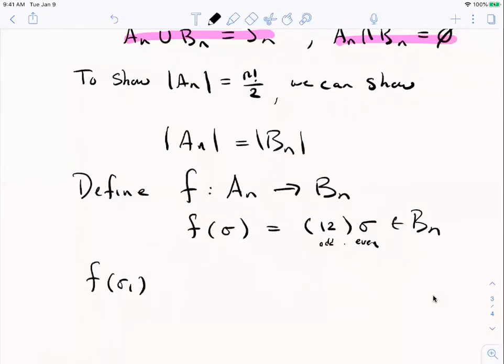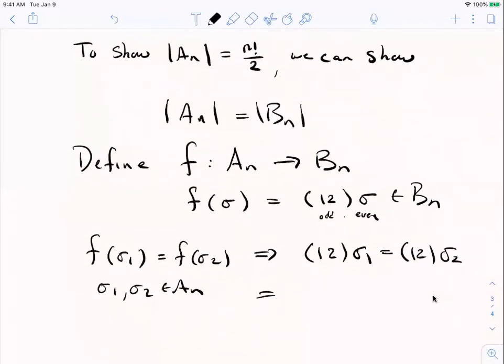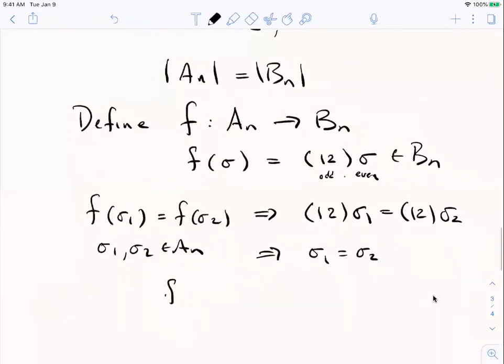If F of, say, sigma one is equal to F of sigma two, where sigma one and sigma two are two arbitrary elements of An, well, then one, two times sigma one is one, two times sigma two. And by the cancellation law in the group S n, I can cancel that one, two on the left hand side. That would mean that sigma one is equal to sigma two. So our F is one to one. All right.